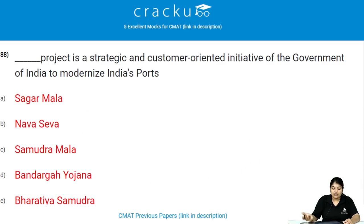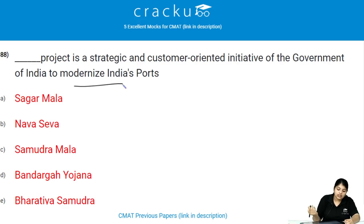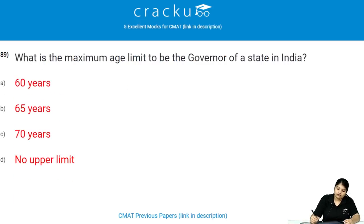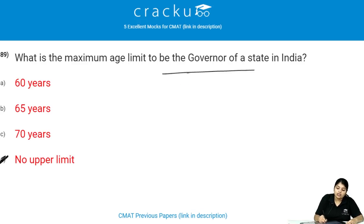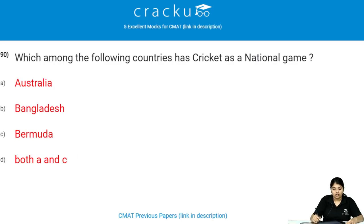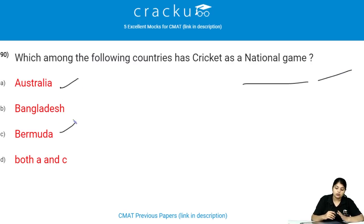The Sagarmala project is a strategic and customer-oriented initiative of the government of India to modernize India's ports. There is no upper age limit to be the Governor of a state in India. Australia and Bermuda are the two countries which have cricket as their national game.